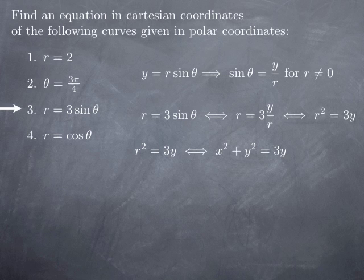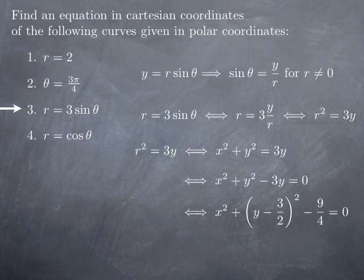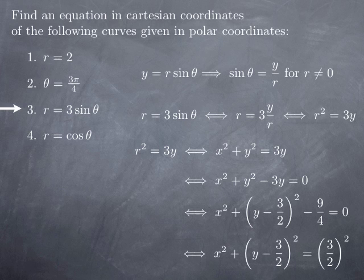You may or may not recognize what that is, but putting everything on one side, y²−3y can be rewritten by completing the square: y²−3y = (y−3/2)²−9/4. Putting 9/4 on the other side, we end up with x²+(y−3/2)²=(3/2)².